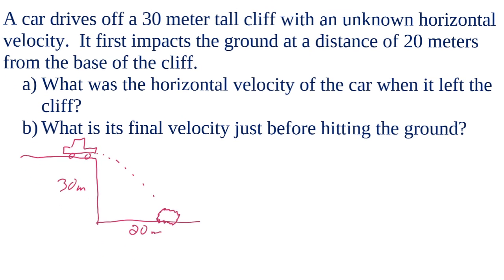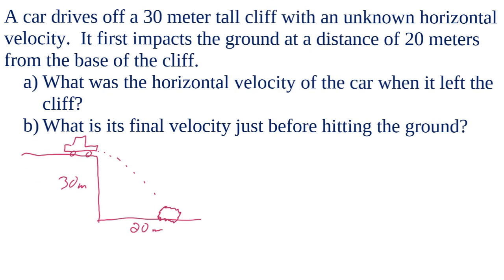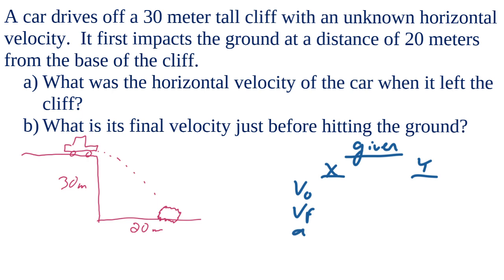The first thing we should do is write down what we know. Since we have two dimensions here, we're going to list the known values in two dimensions — the x direction and the y dimension. Let's write down our five variables: initial velocity, final velocity, acceleration, displacement, and time.